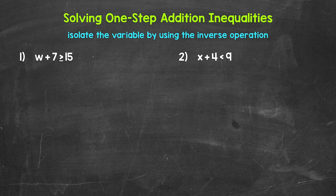We'll start with addition and then move on to subtraction. When we solve inequalities, we want to isolate the variable — get it by itself on one side of the inequality. We do that by using inverse operations, opposite operations. We use an inverse operation to undo another operation, and this will isolate the variable.